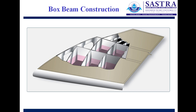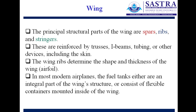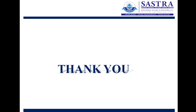To summarize, the principal structural parts of wings are spars, ribs, and stringers, reinforced by trusses, I-beams, or tubing including the skin. Wing ribs determine the shape and thickness of the wing — their purpose is to provide the required airfoil shape. In most modern airplanes, fuel tanks are either integral parts of the wing structure or consist of flexible containers mounted inside the wing.